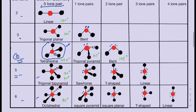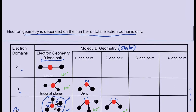In a tetrahedral shape, there are four bonds in a three-dimensional arrangement. Two bonds are in the plane, drawn with regular lines. One bond comes out of the page, shown with a solid wedge. One bond goes back into the page, shown with dashed lines. The bond angle between each of those bonds is 109.5 degrees.